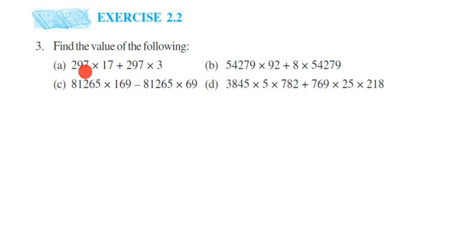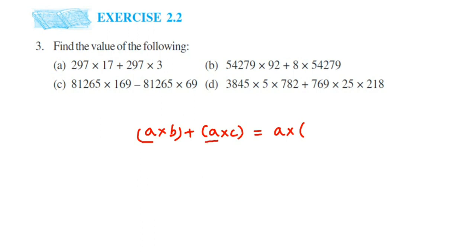The distributive property is very simple. Whenever you see the same number on both sides of the addition or subtraction, you have to use the distributive property. What does it say? Suppose we have a×b + a×c, this will be equal to a×(b+c). We take 'a' out because 'a' is present on both sides of the plus. So instead of multiplying twice and then adding, we use the distributive property.